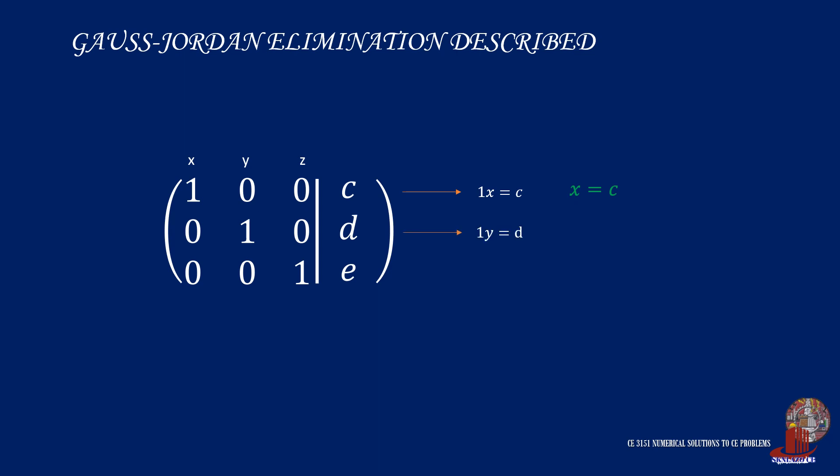The second row shows 1y is equal to d, or that says that the y-value is d. And the third row is equal to e, simplified as z equal to e.